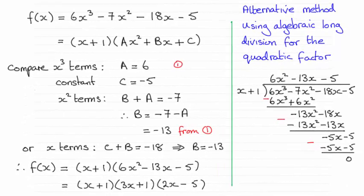Hi there. Now for this part of the question, we had to factorize f(x), and it turns out to be (x + 1)(3x + 1)(2x - 5).